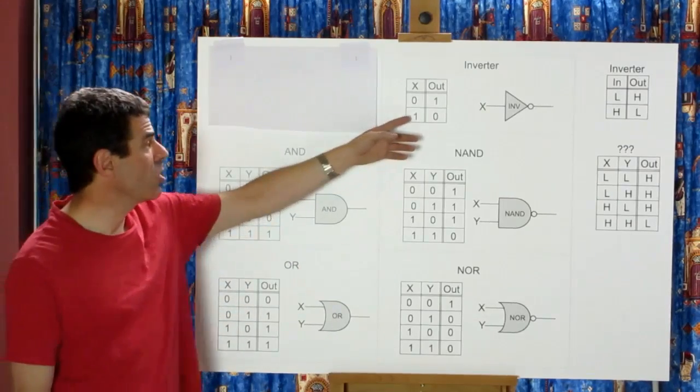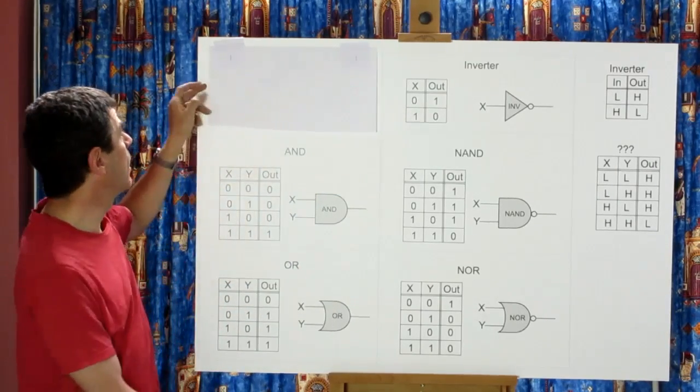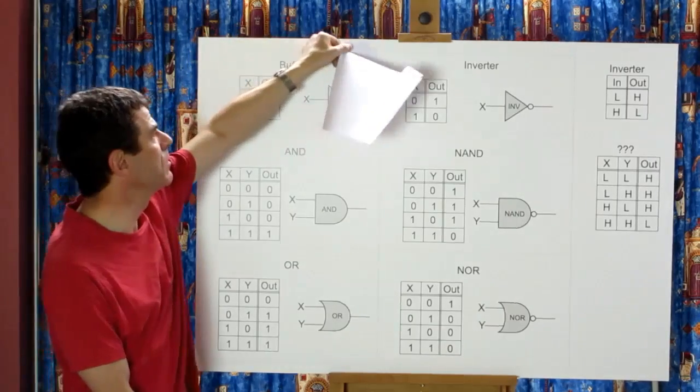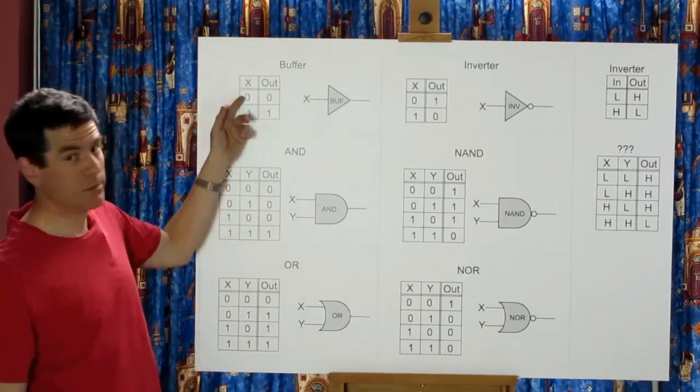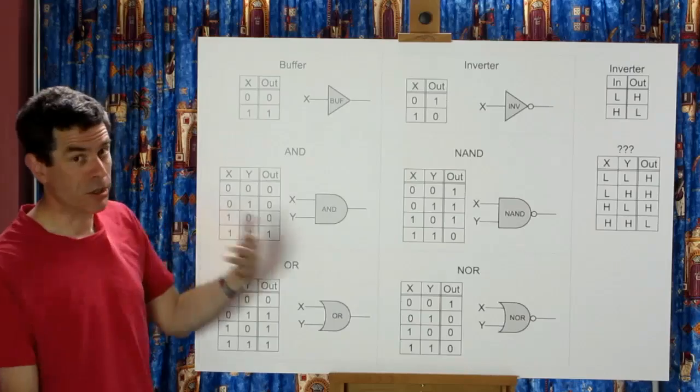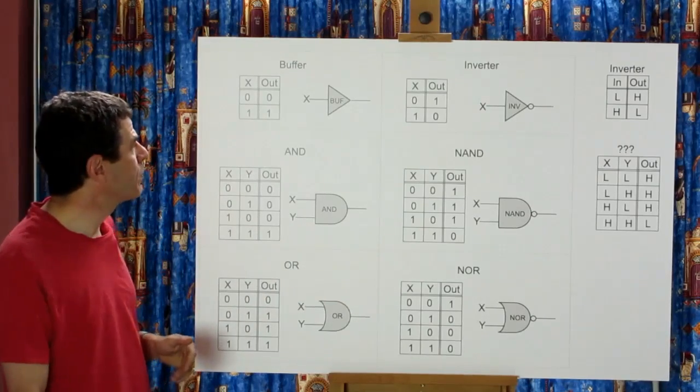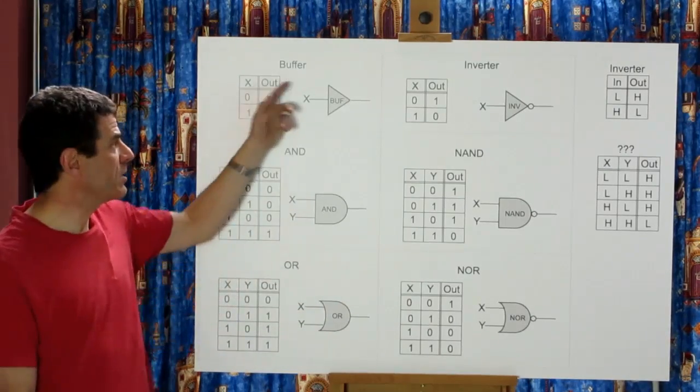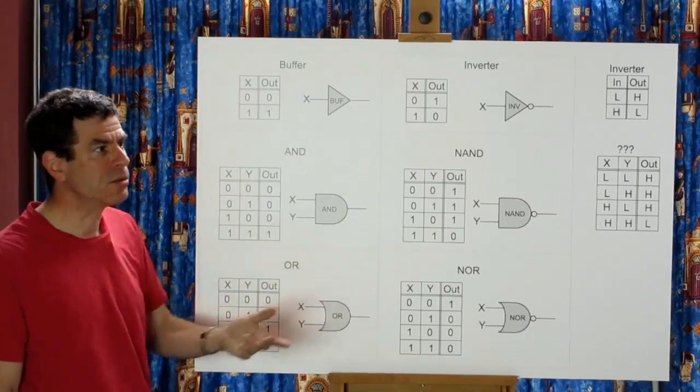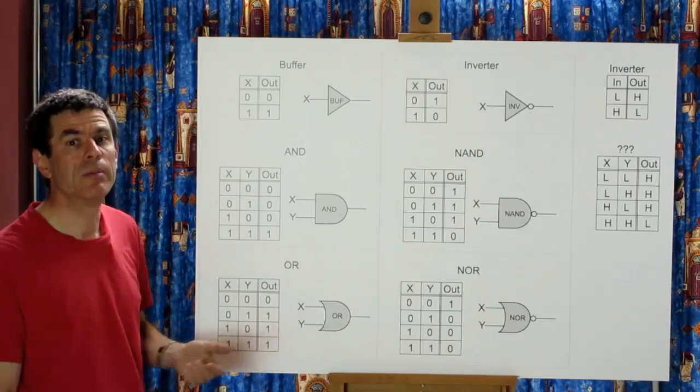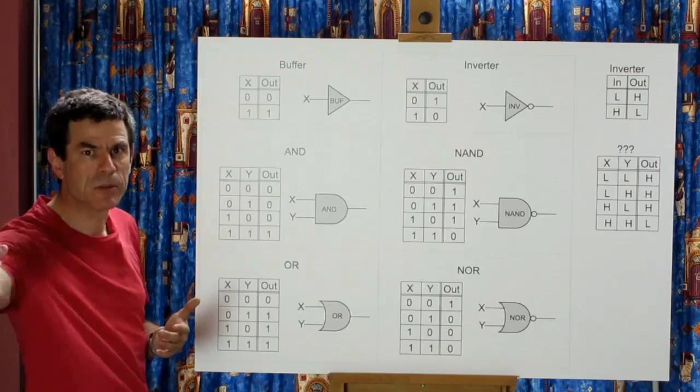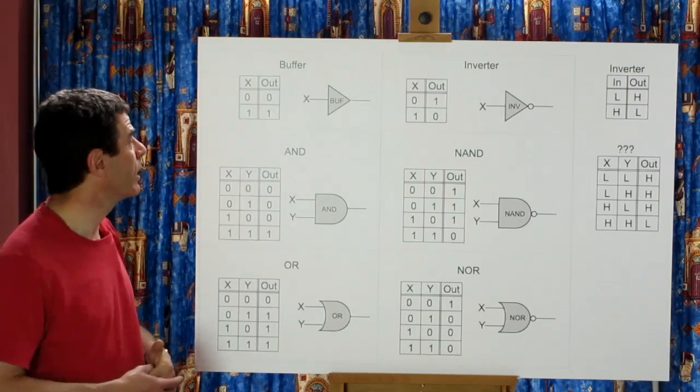For completeness there is a complementary version of the inverter which looks like this. Here we get out what we put in which isn't hugely exciting. In designing logic this has no real value but in the real world it's sometimes helpful to have a buffer in place which lets you drive signals for further distance or something like that.